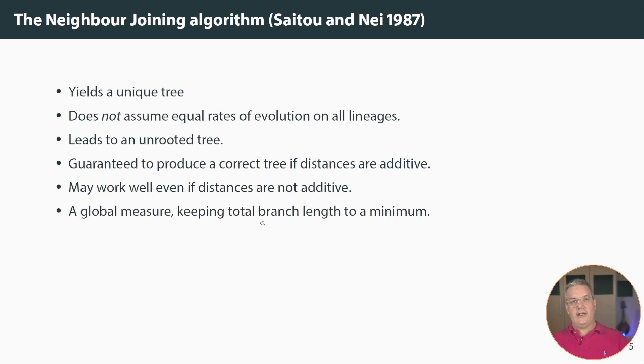It is trying to keep a measure of total branch length to a minimum total divergence to a minimum and it has in computing it has a time complexity that's cubic in the number of sequences and so it can be used for a fairly large number of sequences and it's reasonably rapid. It's slightly slower of course than UPGMA which is n squared log n.